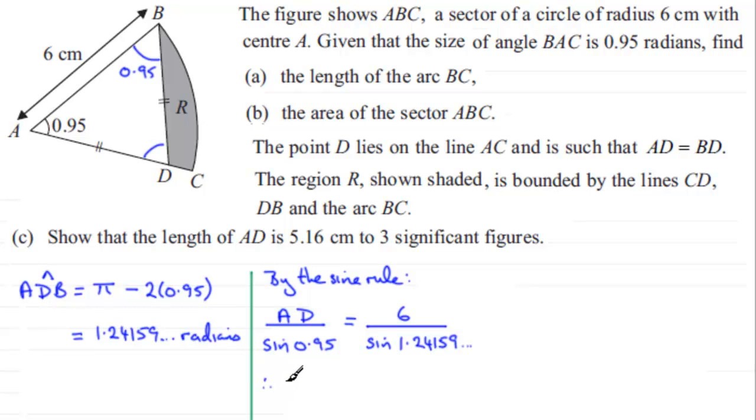And if we rearrange this, we therefore have the length AD will equal this fraction because what we're going to do is multiply both sides by the sine of 0.95, and it's going to give us 6 over the sine of 1.24159 and so on, multiplied by the sine of 0.95 radians.